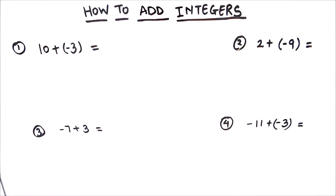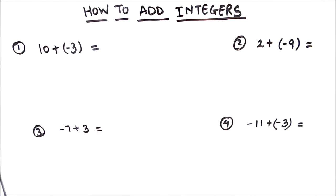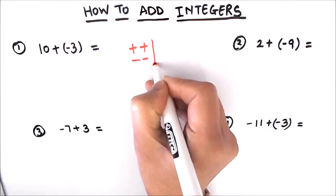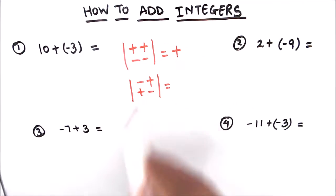Hello students, in this video we are going to learn how to add integers. Without wasting any time, let's start with the first example where we are adding 10 and negative 3. First, we need to take care of a few rules of adding integers: when the signs are the same, we add the two numbers, and when the signs are not the same, we subtract the two numbers.